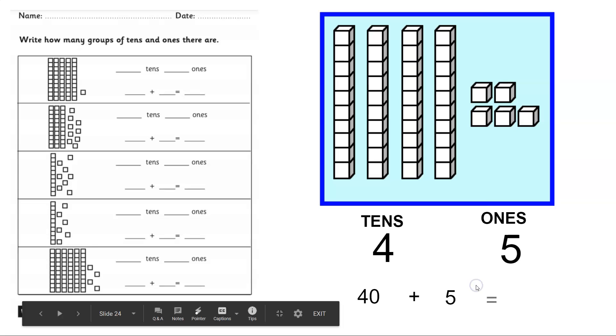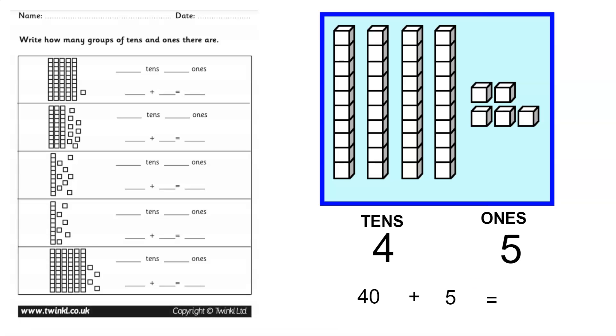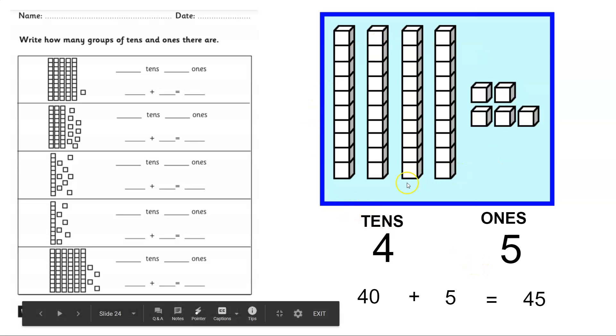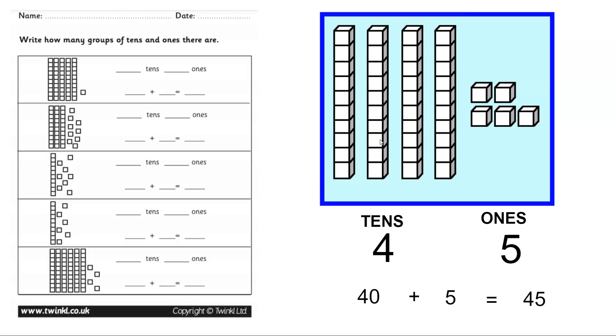And the number we get is 45. So when you look at this, you can say this is 45. But when it asks you how many tens, you only say four.